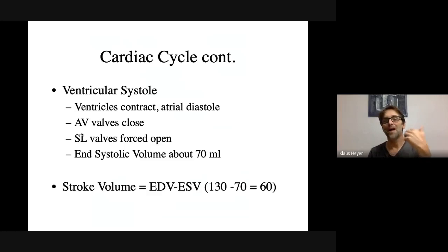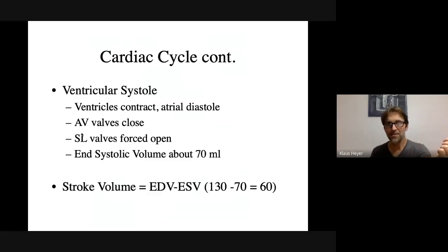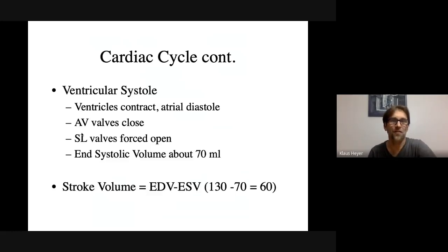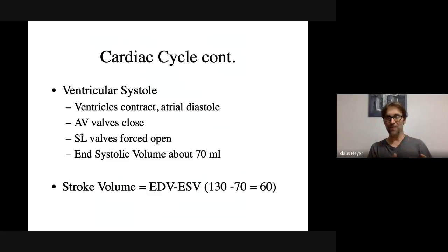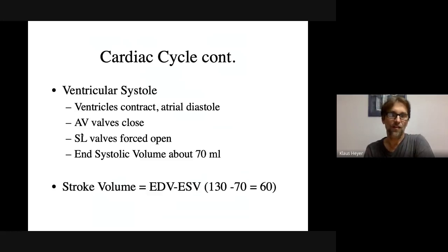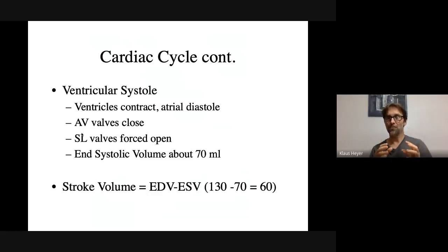Not all of that blood makes it out. In an ideal world we would want all of it out, but it just doesn't happen. A lot of that blood leaves the ventricles but not all of it. So now we have something called end systolic volume — how much blood is left in the ventricle after the ventricle contracted.